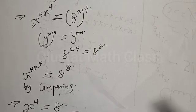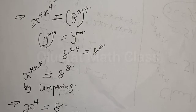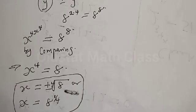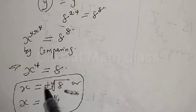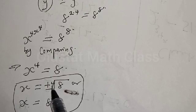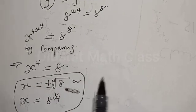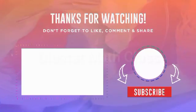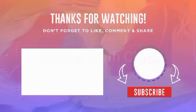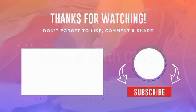By comparing, we have s raised to power 4 equal to 8, and from that s is equal to plus or minus the fourth root of 8, or s is equal to 8 raised to the power of 1 over 4. That is the final answer. If you enjoyed the class, please don't forget to like, share, comment and subscribe. Thank you.